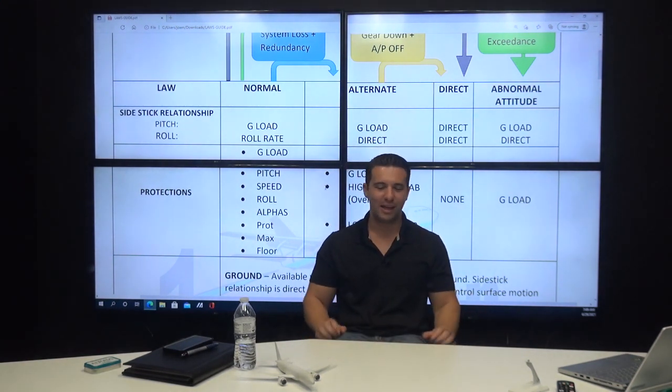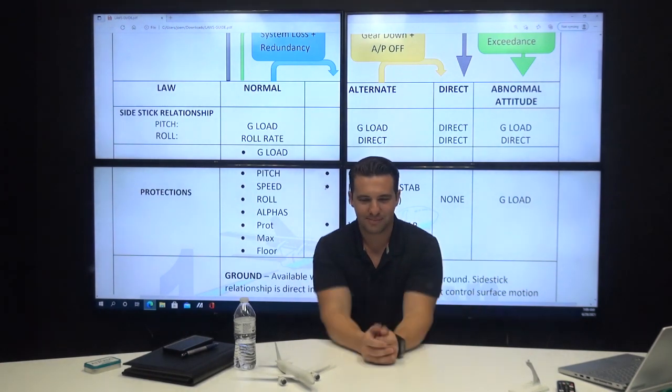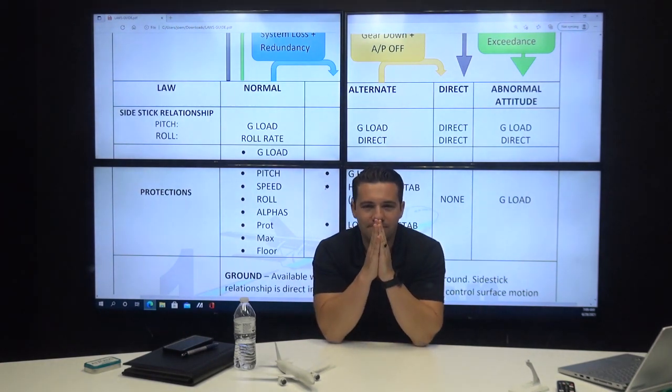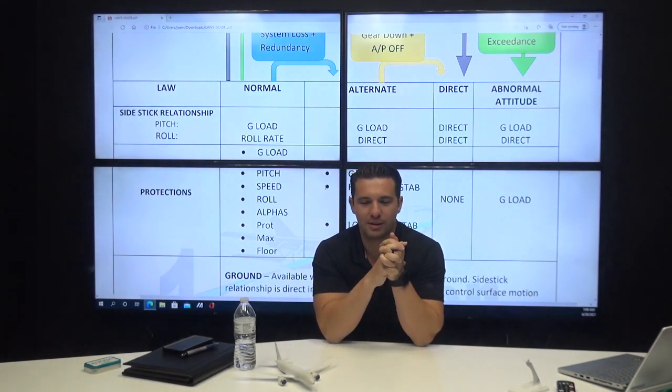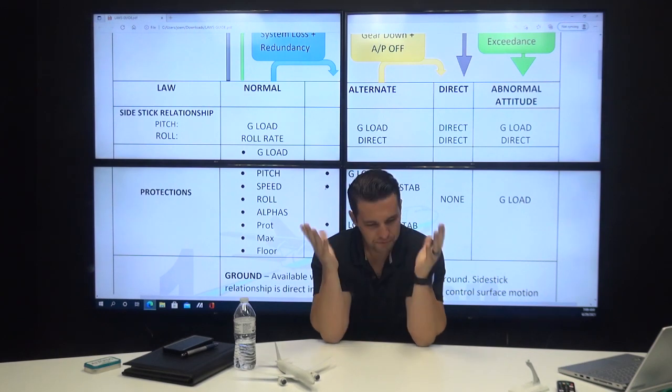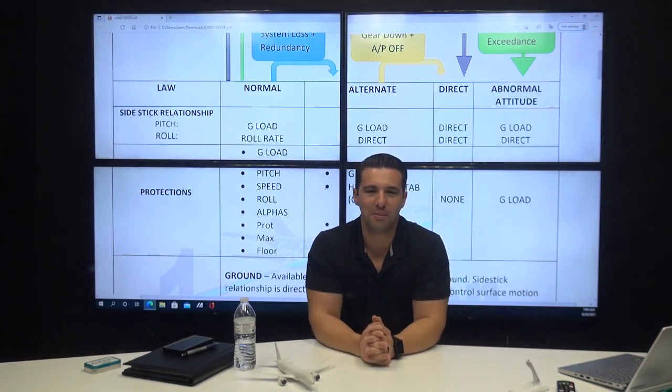Rene, I see you thinking, man. Tell me. Yes, correct. These are the alpha protections. This is it, man. This is the meat and potatoes right here. What is alpha protections? Alpha floor, alpha max, alpha prot.